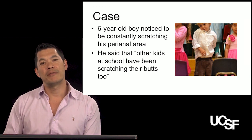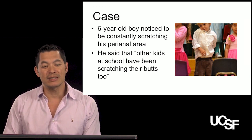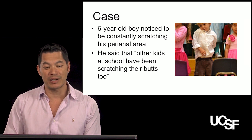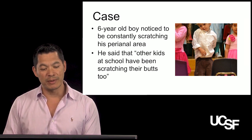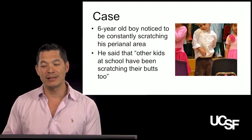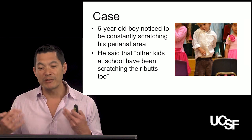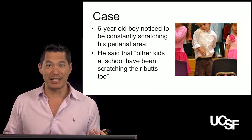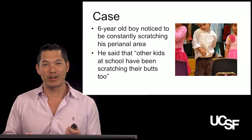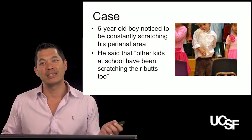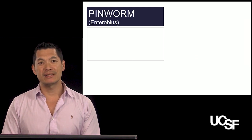Let's start off with a case — a very typical case you might see in the United States. A six-year-old boy is noticed to be constantly scratching his perianal area. He says the other kids at school have been scratching their butts too. Every time I see a kid scratching like that, I always think about whether or not they might have this particular parasite. This is a pinworm, or Enterobius.